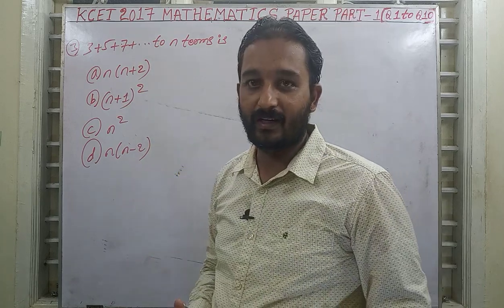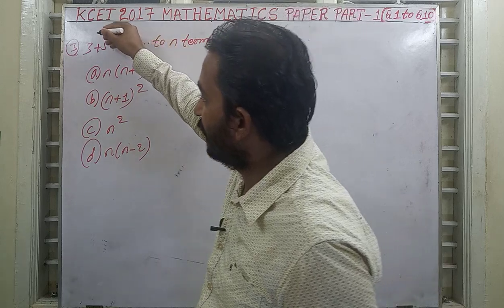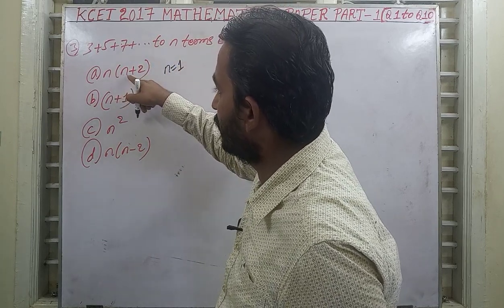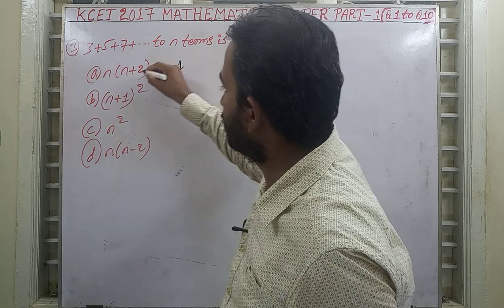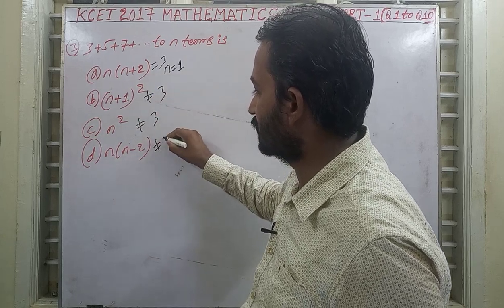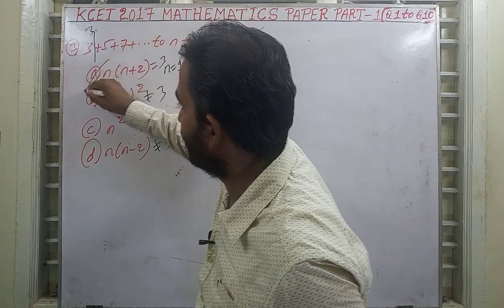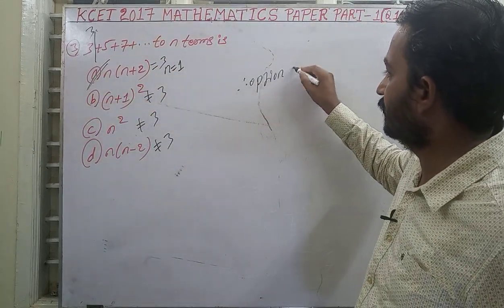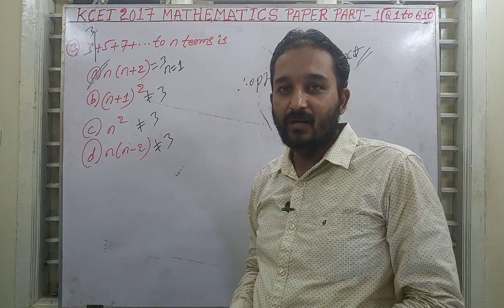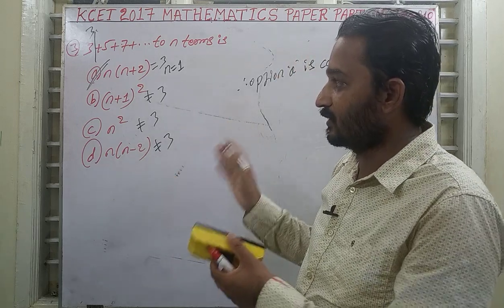Instead, I am solving this using the Principle of Mathematical Induction — put n = 1 in the given options to see which option gives the correct sum of the first term. The first term is 3. Checking the options: only option A gives 3 when n = 1. Therefore option A is correct. This is an easy question; students have already solved it in the NCERT textbook, but here a shortcut method is used.